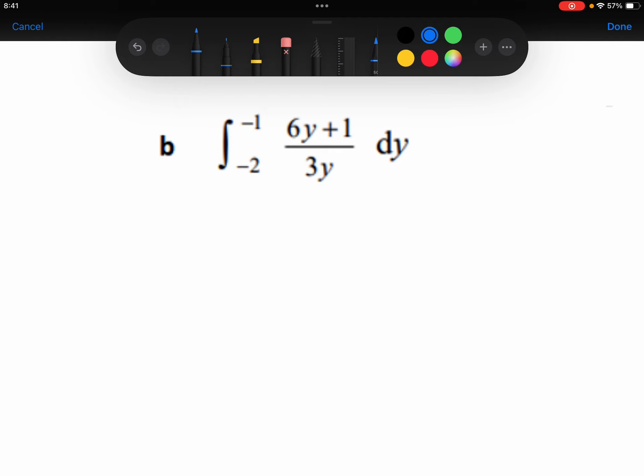Similar idea, let's split this fraction up to be 6y over 3y plus 1 over 3y. The 6y over 3y, the y's will cancel out, and we'll get 6 over 3, which is just 2.